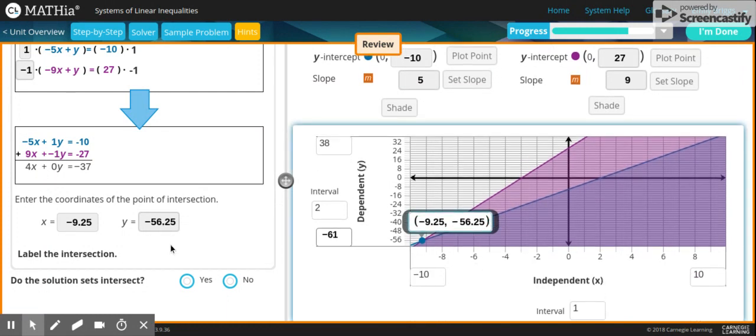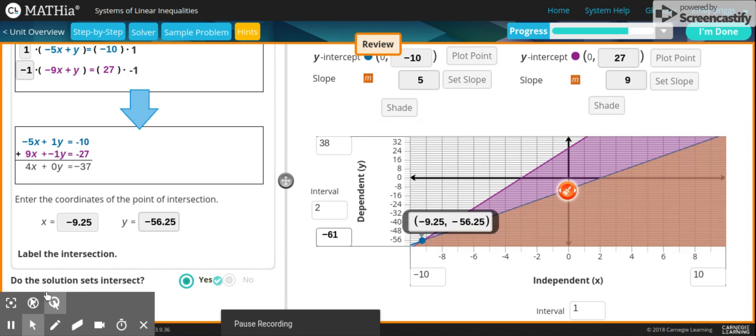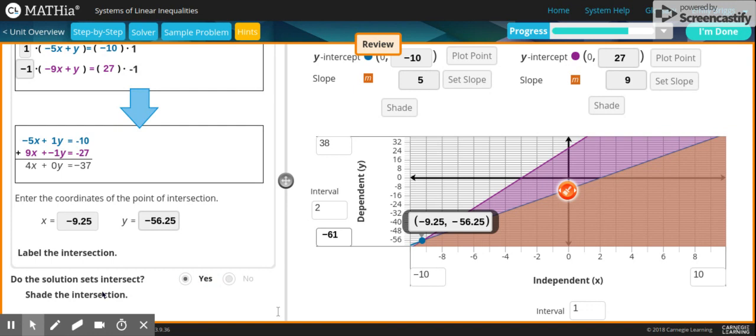Do the solution sets intersect? So do the solution sets that we said are part of the equation, do they intersect with each other? Yes or no? The correct answer is yes, they do intersect. If it means that it's intersecting, it means both of the same colors are together. So in this situation, this section was together.